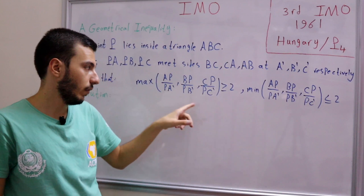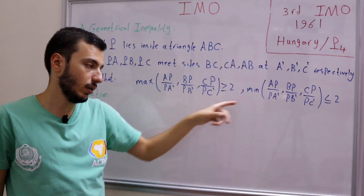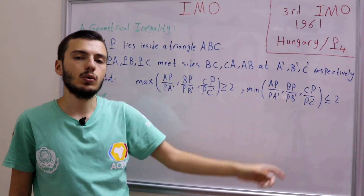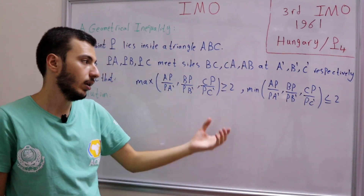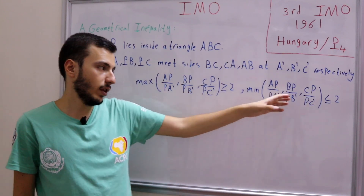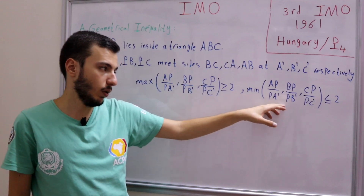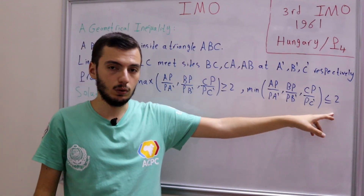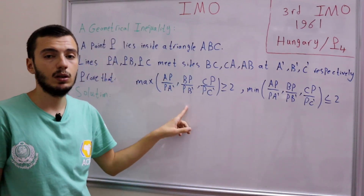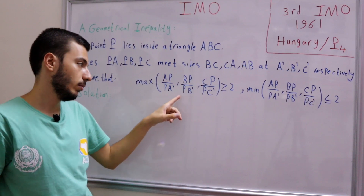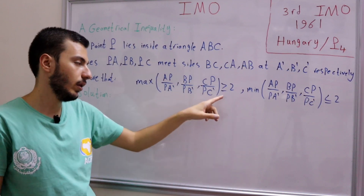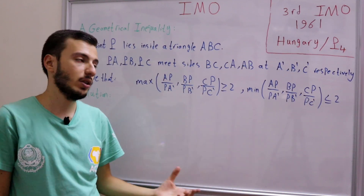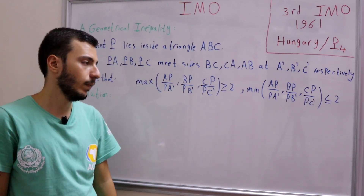We're asked to prove two things. The first is that the maximum of the three quantities AP/PA', BP/PB', and CP/PC' is greater than or equal to two. And the minimum of these three quantities is less than or equal to two.